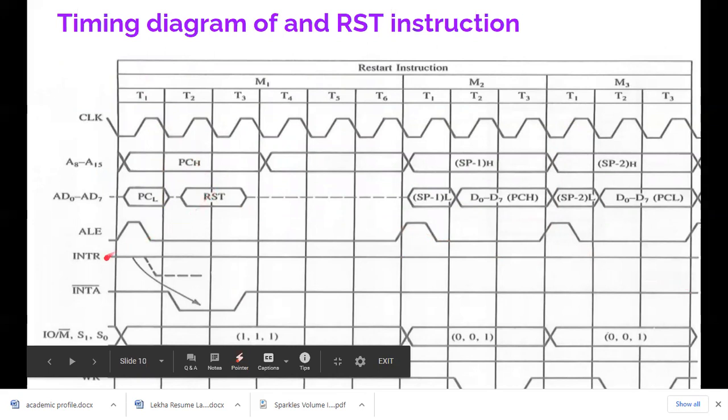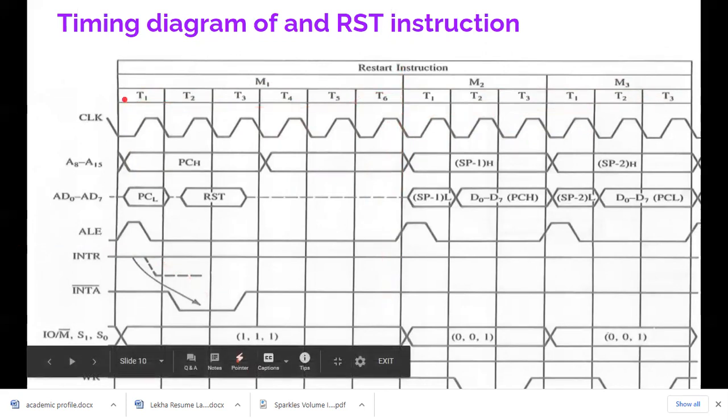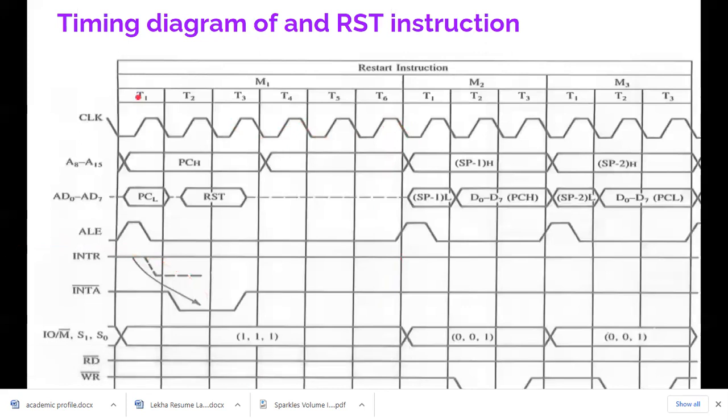As interrupt is high, then the interrupt acknowledge goes low indicating that it acknowledged the interrupted device. This is the clock signals and three machine cycles as I said: M1, M2, M3. The M1 consists of six T states.